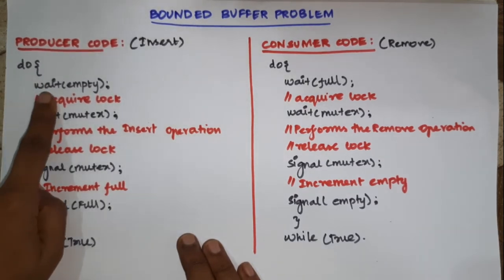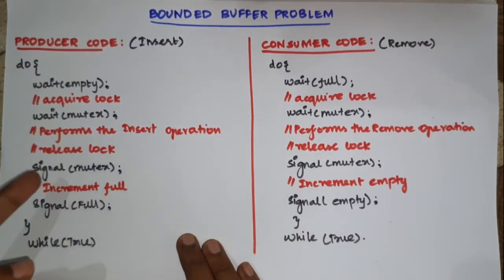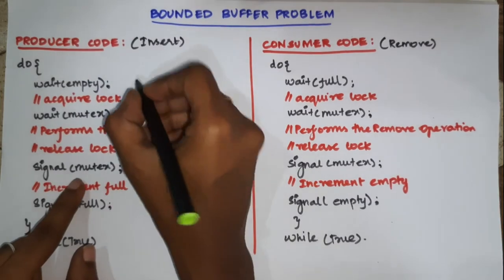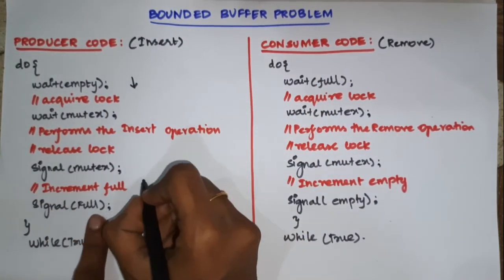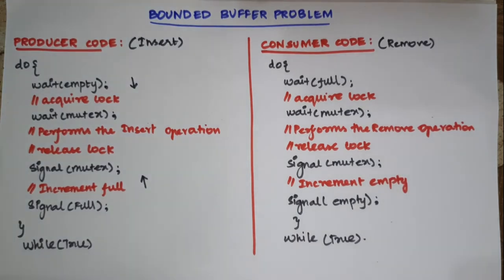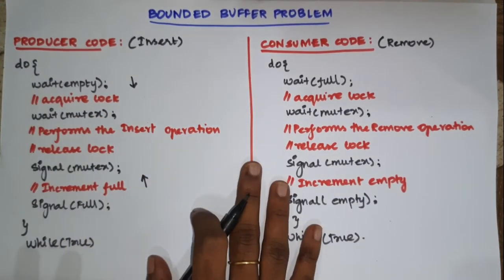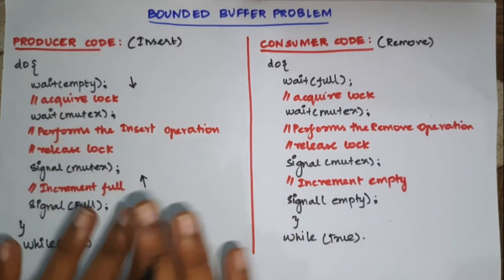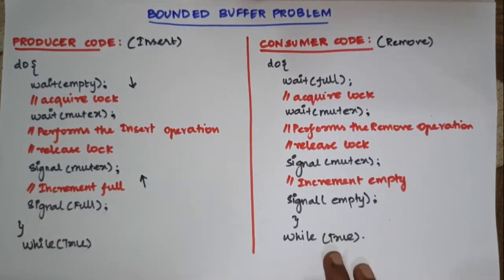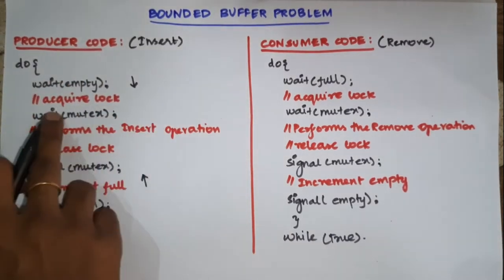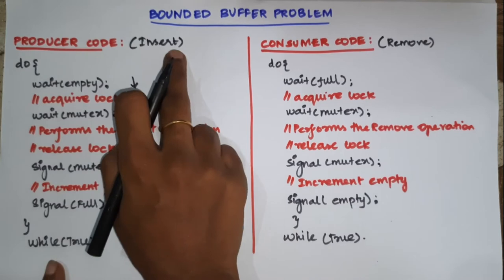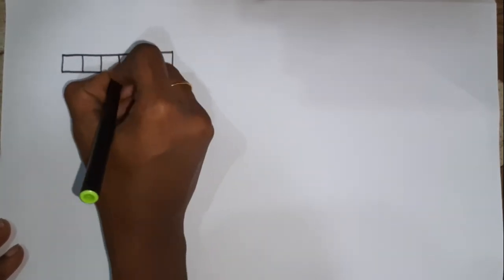With the help of semaphores, we use the wait and signal operations. Wait is for decrementing purpose. Signal is for incrementing purpose. Now first, what do we do? We check the number of slots — all slots are empty. If we see it, the first wait state comes. We have empty slots because the producer needs to insert. For example, if we go to the slots: 1, 2, 3, 4, 5 — this is the producer code.